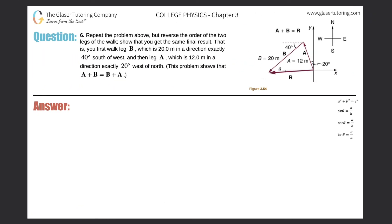Number six. Repeat the problem above, meaning number five, but reverse the order of the two legs of the walk. Show that you get the same final result. That is, you first walk leg B, which is 20 meters in a direction exactly 40 degrees southwest, and then leg A, which is 12 meters in a direction exactly 20 degrees west of north.